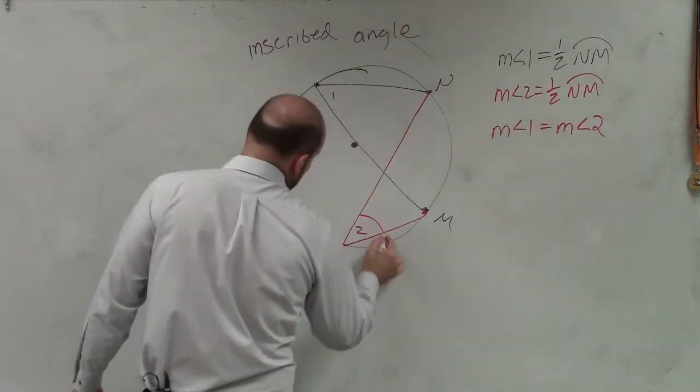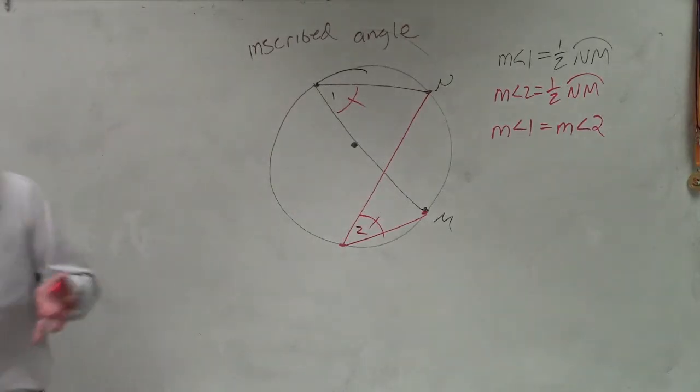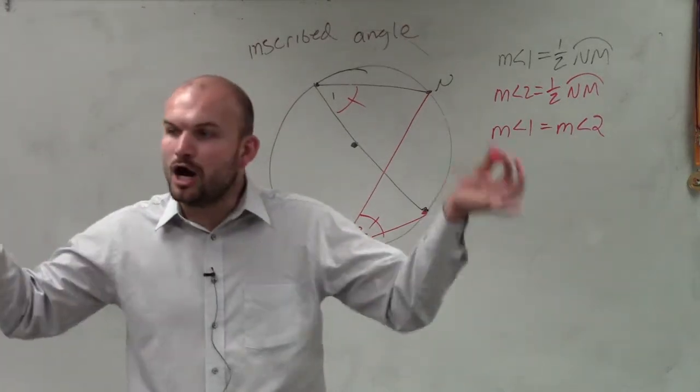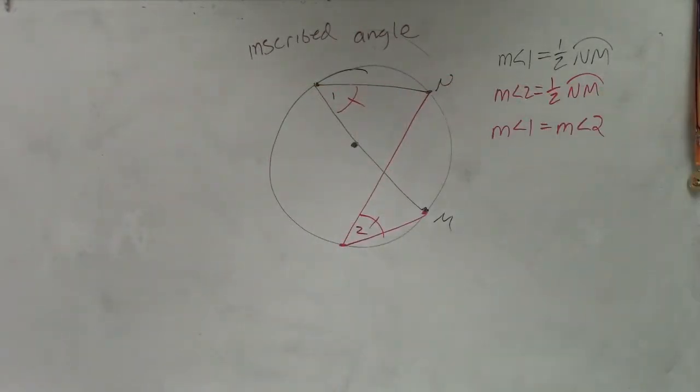So these angles are equal. So when you have two inscribed angles that have the same arc, their angles are going to be equal to each other. So I'm going to spend just about five minutes going...